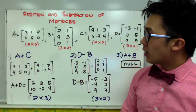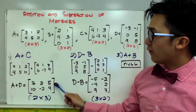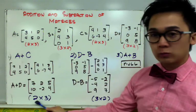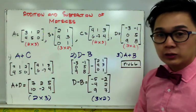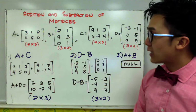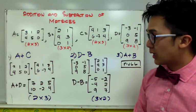So the sum of matrix A and C is simply 7, 10, 2, negative 2, 5, and 4, which is another 2 by 3 matrix. And that is one of the properties that you need to remember in adding and subtracting matrices. You can only add or subtract matrices with the same order.